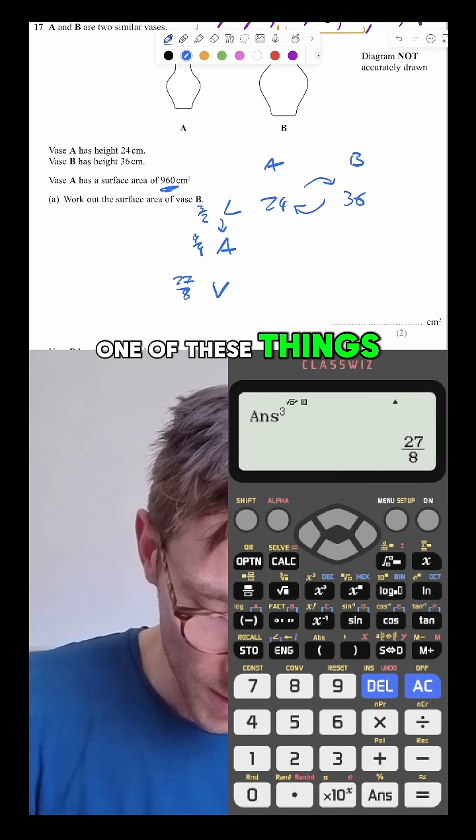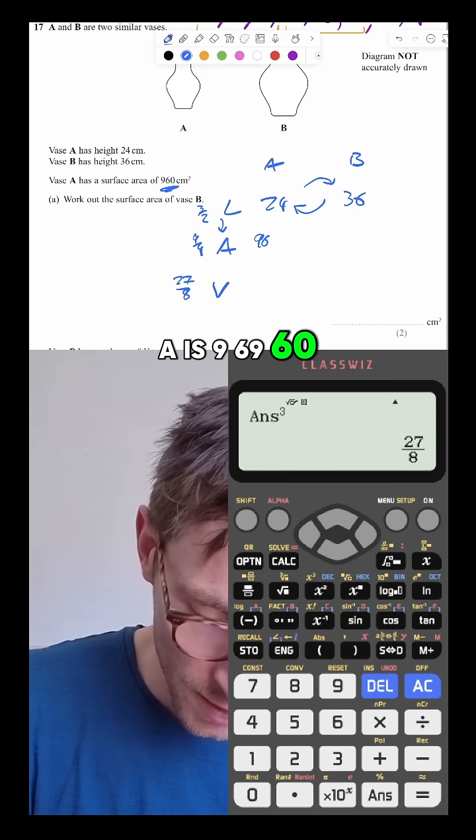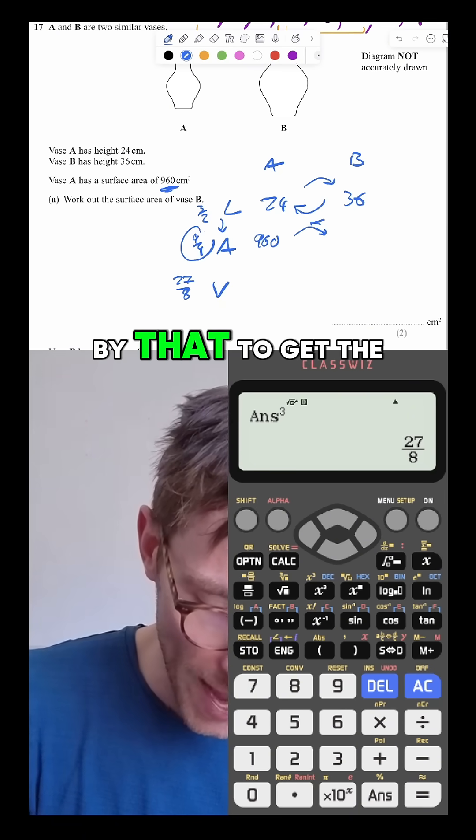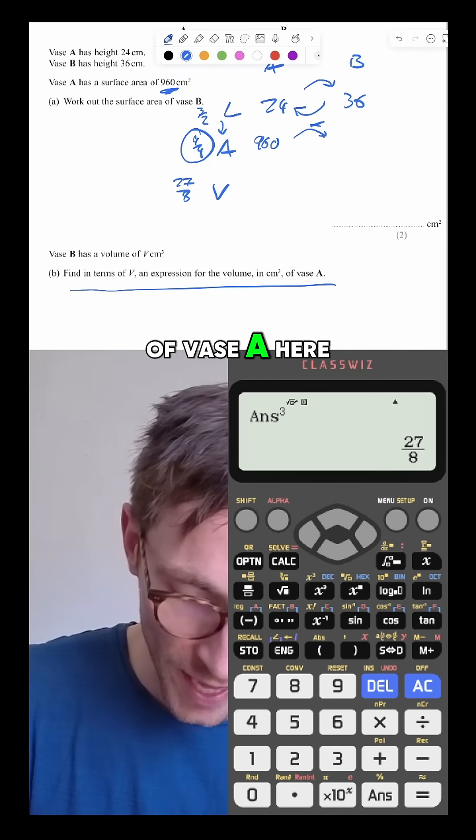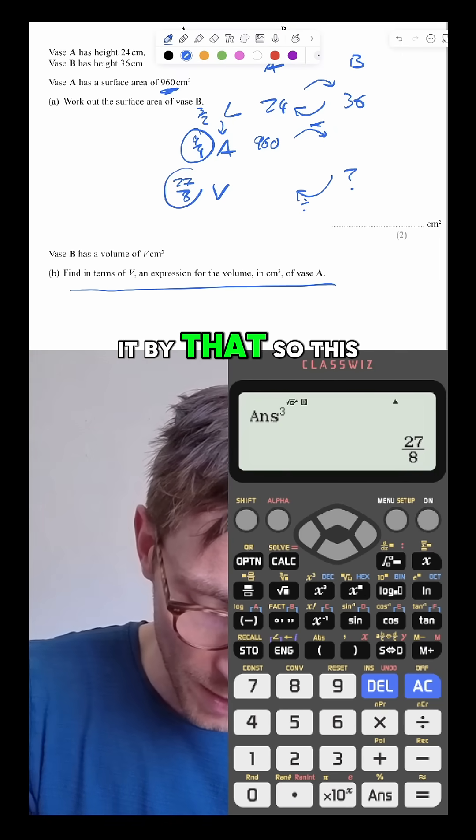Then they're going to give you one of these things. A is 960. So now you times it by that to get the area of the other one, and then they say find an expression for the volume of vase A here. Well, here you would divide it by that.